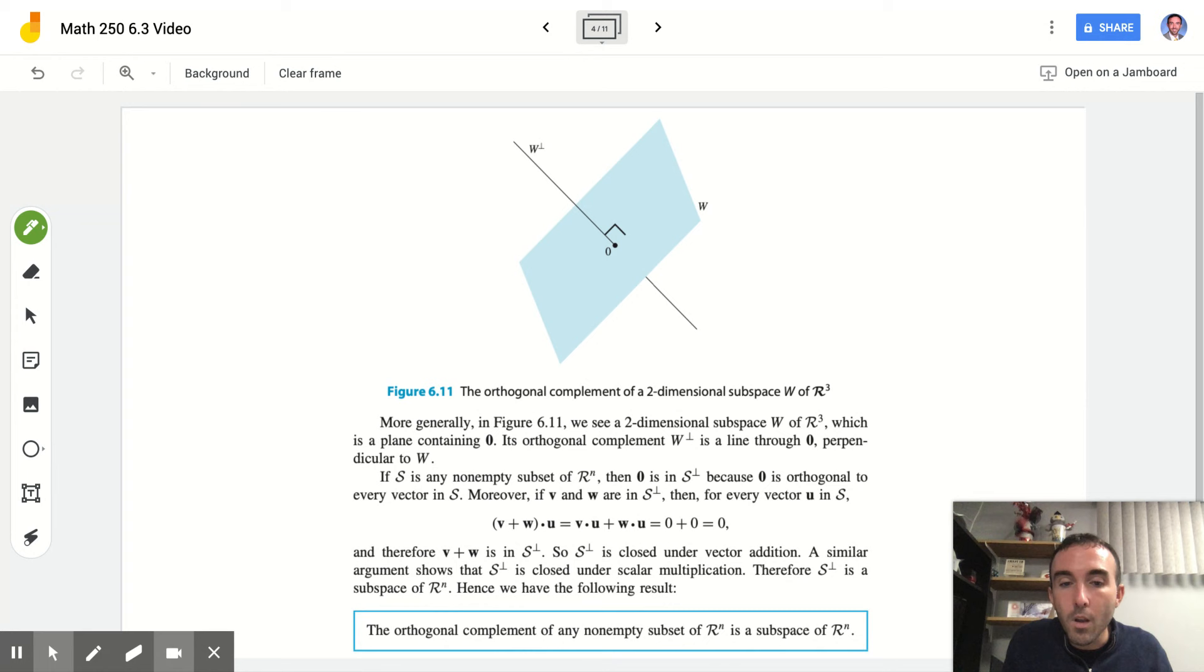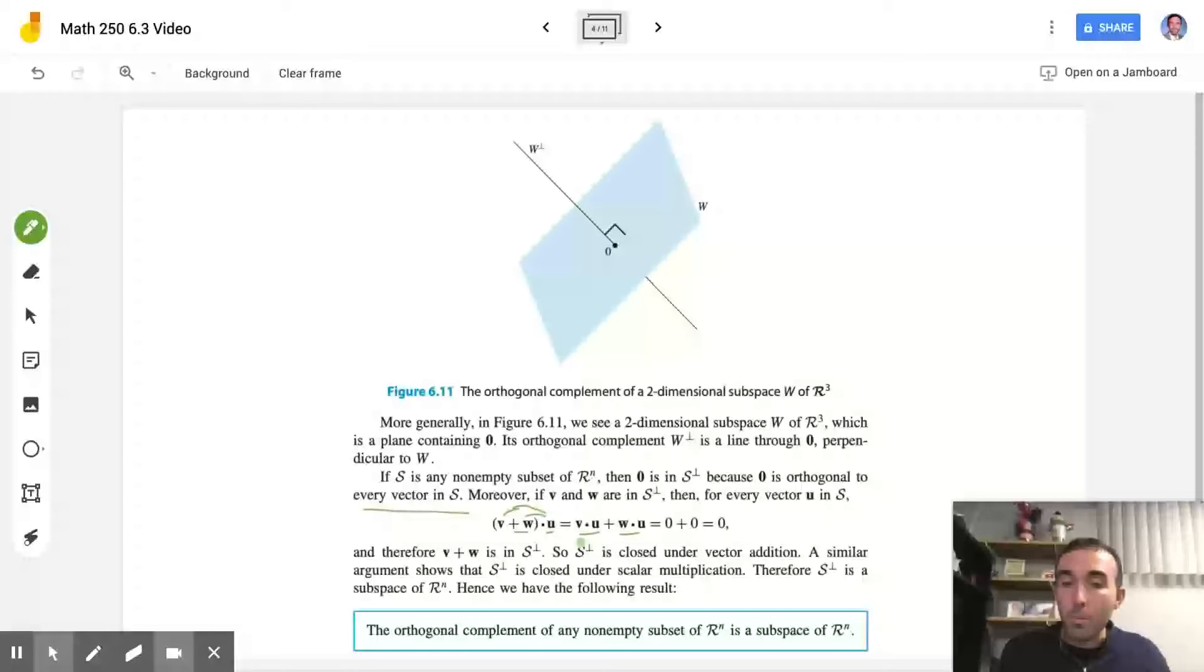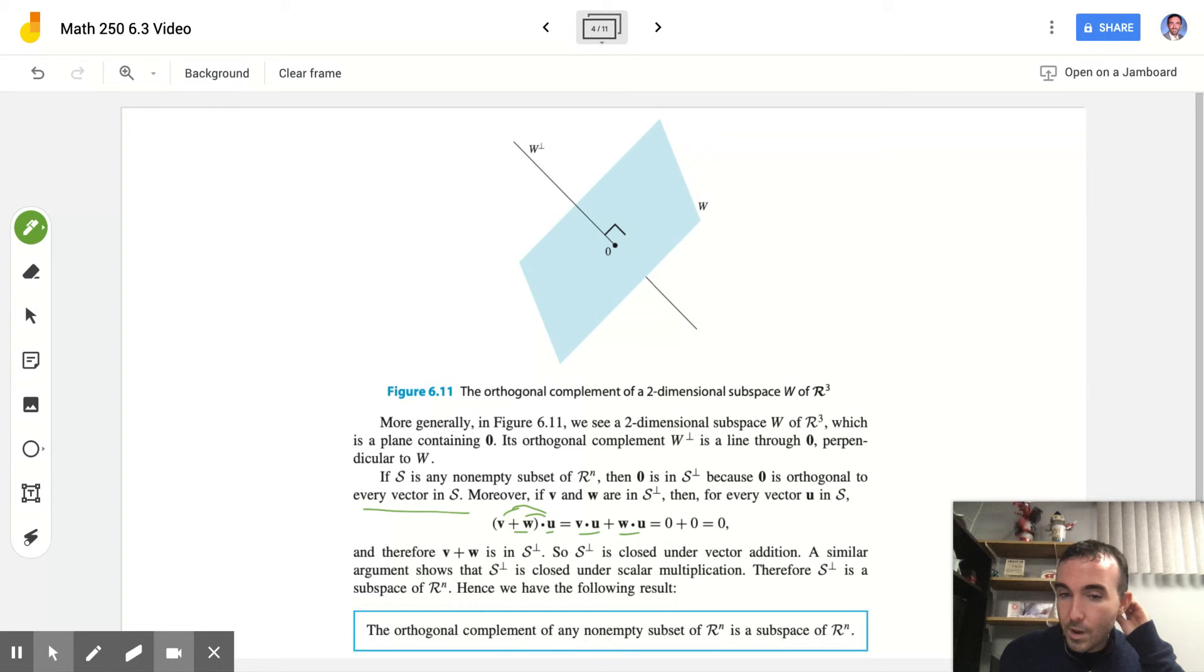So if S is any non-empty subset of R^n, then the 0 vector is in S perp because the 0 vector is orthogonal to every vector in S. Moreover, if two vectors V and W are in S perp, then for every vector U in S, if I find the dot product of the sum of V and W with U using our rules from section 6.1, I get out two dot products at each 0, so that also is 0. So we have the 0 vector in the set, we have closure under addition. We can repeat a similar argument to show that we are closed under scalar multiplication. So these three things lead us to the great fact that S perp is a subspace of R^n.